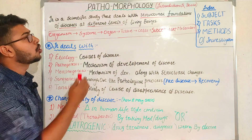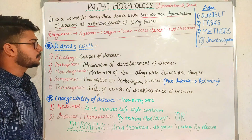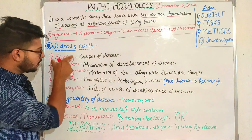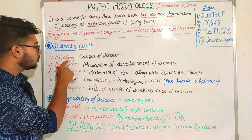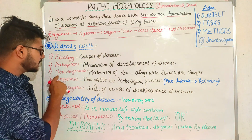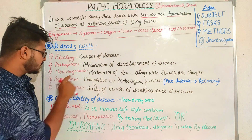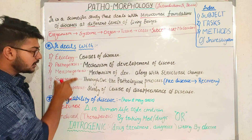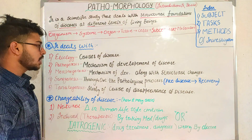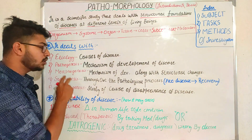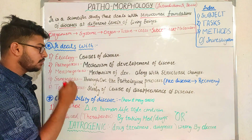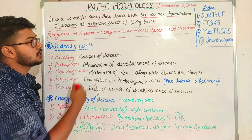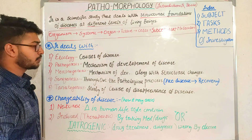Pathomorphology deals with certain important terms: etiology, pathogenesis, morphogenesis, synogenesis, and tanatogenesis. These are important terms because we are going to encounter them while reading about any kind of disease that affects the structure of a cell.